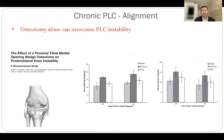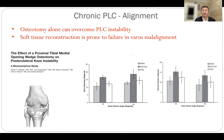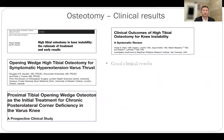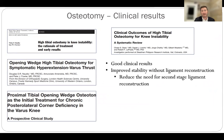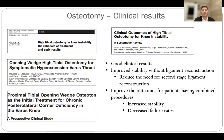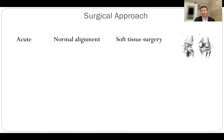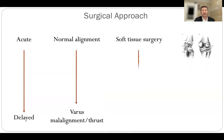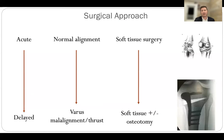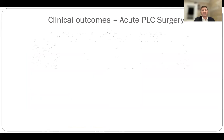In chronic cases, consider alignment — an osteotomy alone can overcome posterolateral corner instability, and soft tissue reconstruction alone is prone to failure in varus malalignment. Multiple studies show good clinical results with osteotomy alone, sometimes negating the need for a second stage, and it improves outcomes for patients who have had combined osteotomy and posterolateral corner reconstruction. So: acute injuries with normal alignment have soft tissue surgery; delayed injuries with varus malalignment or a thrust get soft tissue combined with an osteotomy.